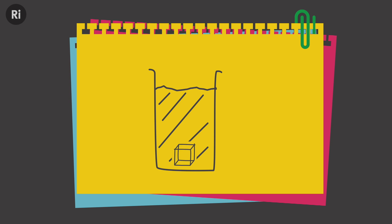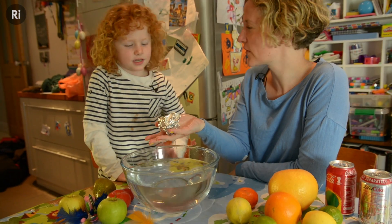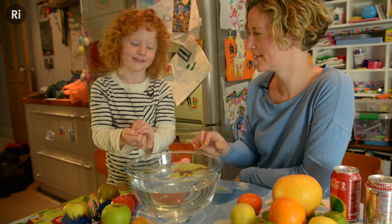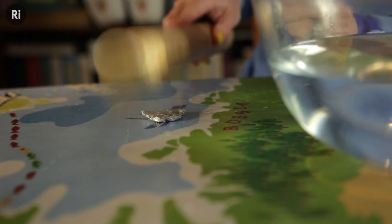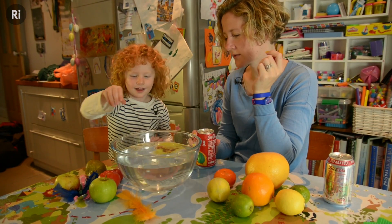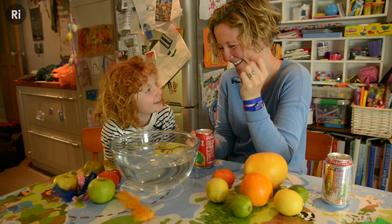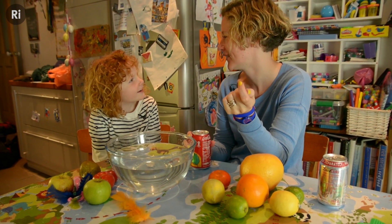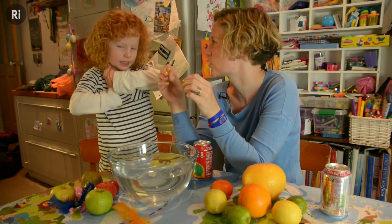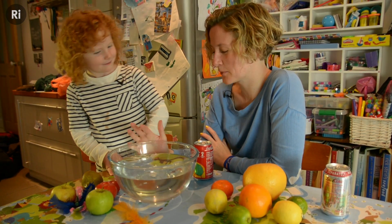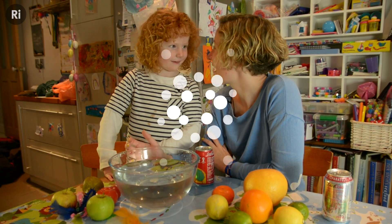The density of an object is defined as the mass divided by its volume. If something is more dense than water it will sink; if it is less dense it will float. Using tin foil is a great way to explore density — with the same piece of foil we can scrunch it into a ball and it floats, but if we really squish it down it will sink, because we're squashing out the air.